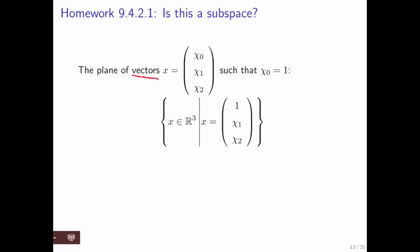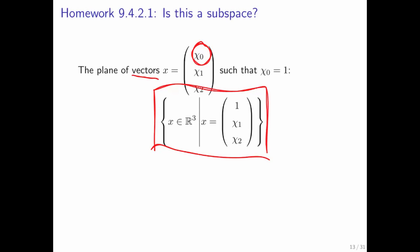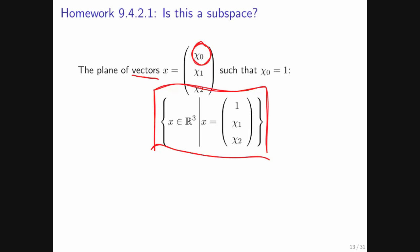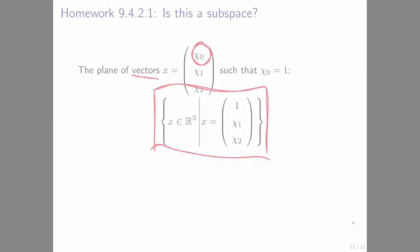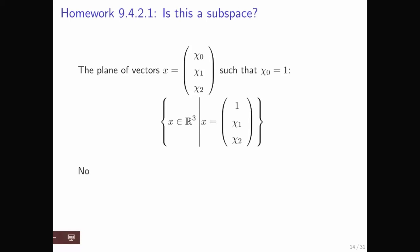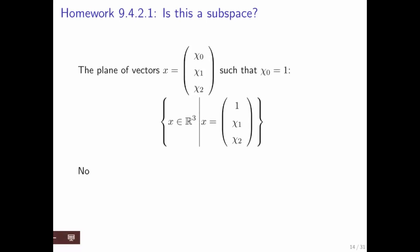What about all of the vectors that have the property that the first element is equal to one — the set of all vectors that look like this? This time the answer is no. Why? The zero vector is not in this set, because the zero vector doesn't have a first component equal to one.